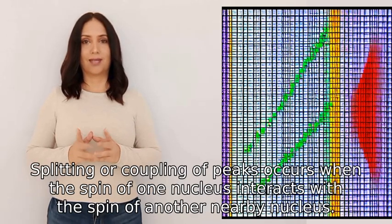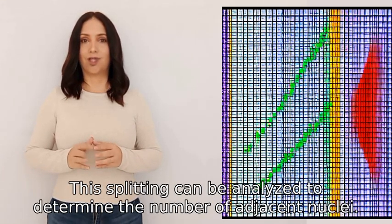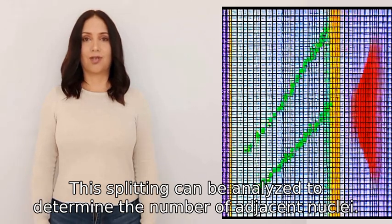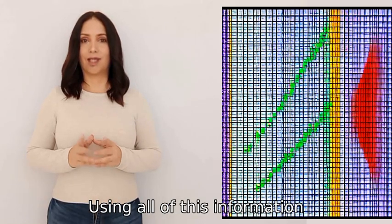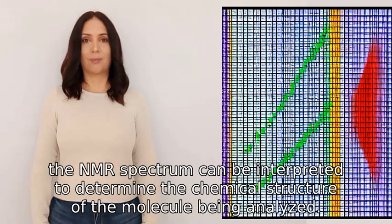This splitting can be analyzed to determine the number of adjacent nuclei. Using all of this information, the NMR spectrum can be interpreted to determine the chemical structure of the molecule being analyzed.